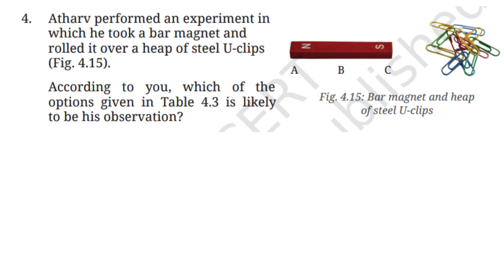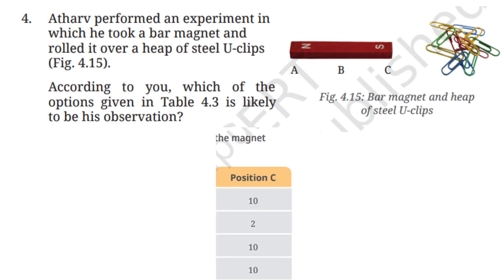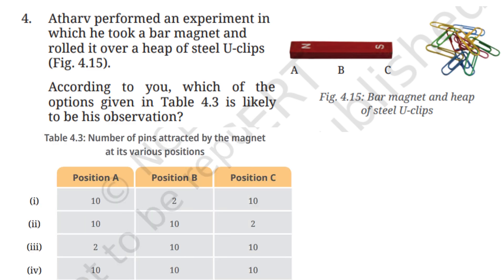Question 4: Atharv performed an experiment in which he took a bar magnet and rolled it over a heap of steel clips. We know that magnetic force is strongest at the poles — positions A and C — and weakest in the middle, position B.